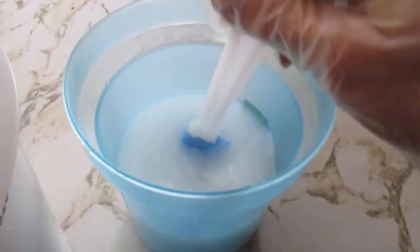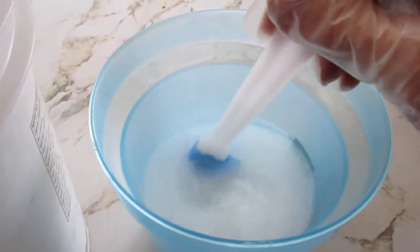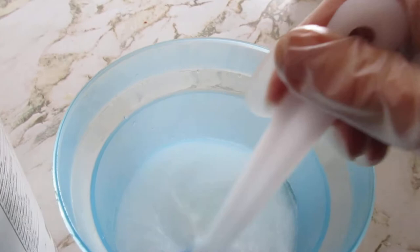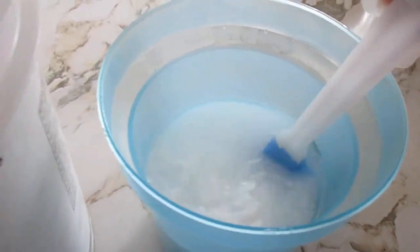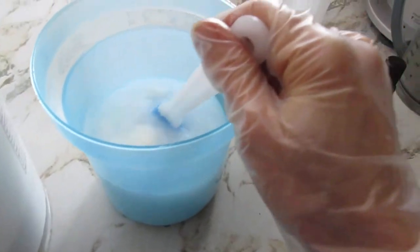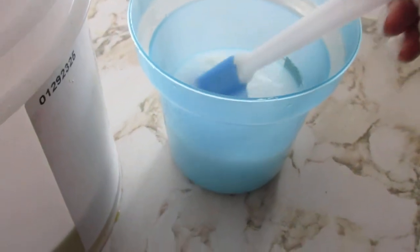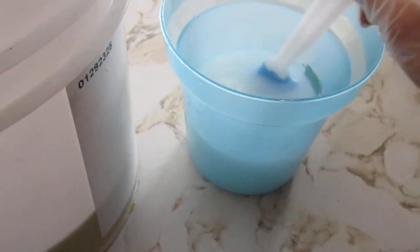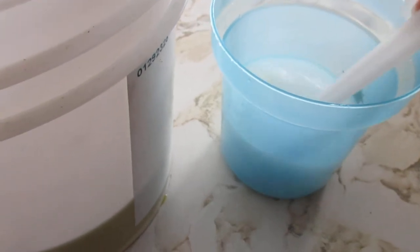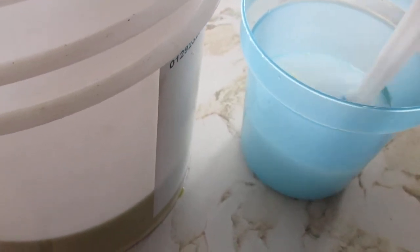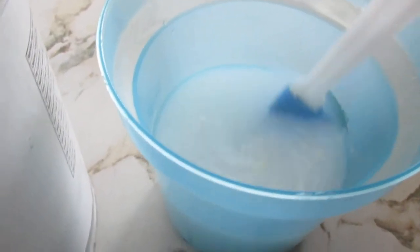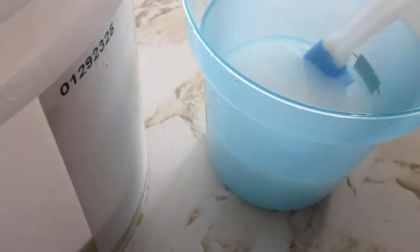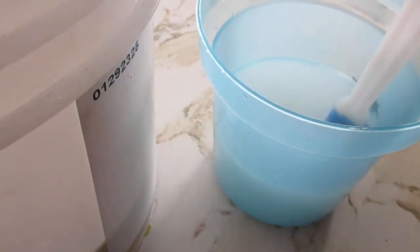So this is 3.5 ounces of lye times three. Then I've got my olive oil, which is 24 ounces times three, and then my water is 6 ounces times three. Stir up this lye really well here. That's dissolved very nicely.